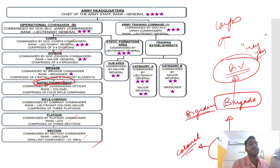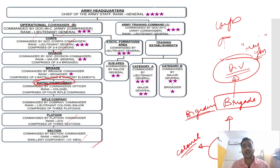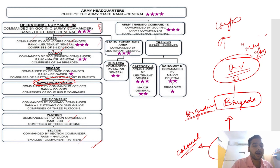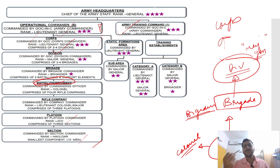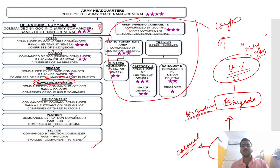After Corps come Operational Commands. There are six operational commands, each commanded by a GOC-in-C — General Officer Commander in Chief — also of the rank of Lieutenant General. There is also an Army Training Command. Other formations like static formations, areas, training establishments, sub-areas, and Category A and B exist, but you are not expected to know all of those in detail.